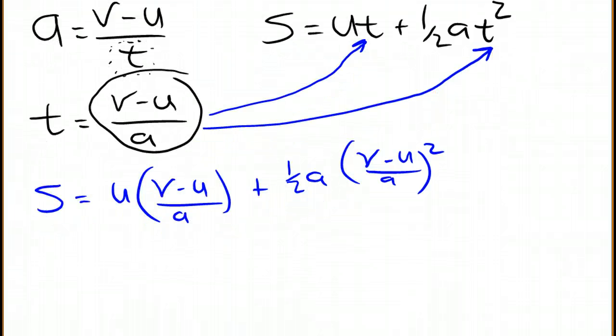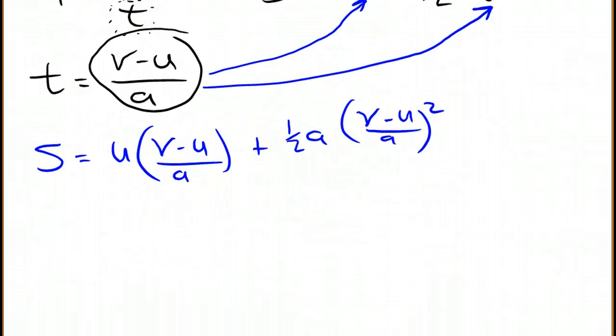Now it's a lot of work from here to carefully make sure you have everything lined up, but that's what we're going to try to do. We're going to go s equals uv over a. So u times v over a minus u times u,